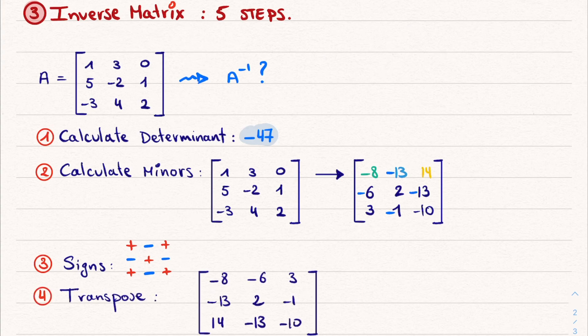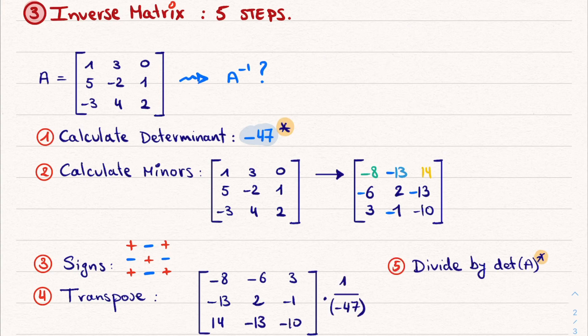And now the hardest part is done. Step 4 is transposing our matrix, swapping rows and columns, and in step 5 we divide the result by the determinant we calculated in step 1. And the result is the inverse matrix of our original matrix.